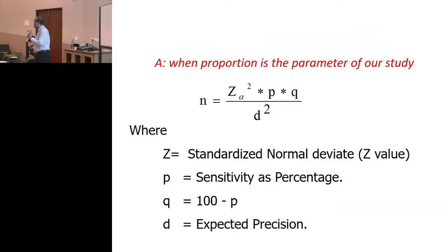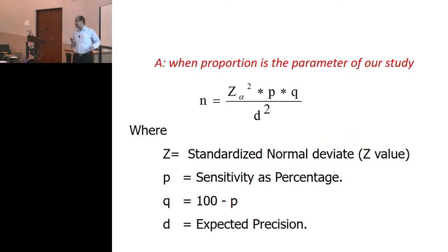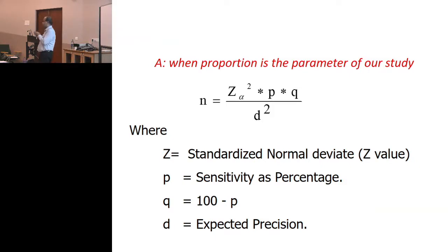The study is able to find the difference statistically significant when a real difference exists — that is called power. But we are not talking about difference here. We are talking about how precisely we estimate. As you increase your sample size, your error becomes smaller and precision becomes higher.